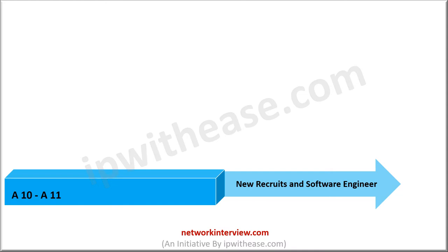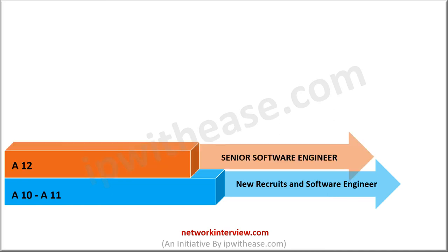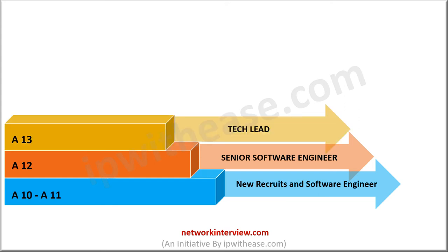After two or three years of experience, you will be promoted to band A12, or senior software engineer. It is an intermediate level posting with added responsibilities. A senior software engineer will be supervising and guiding personnel in the entry band. The average annual salary of a senior software engineer is above 10 lakhs INR.